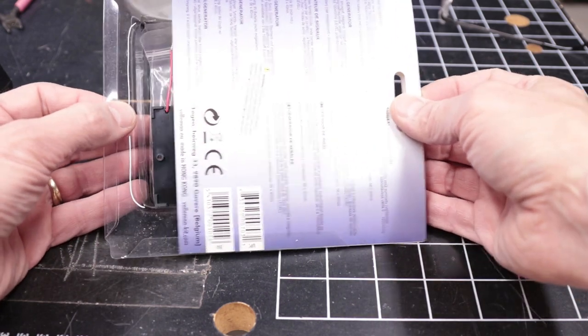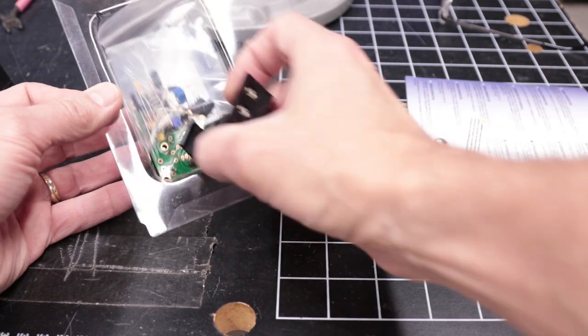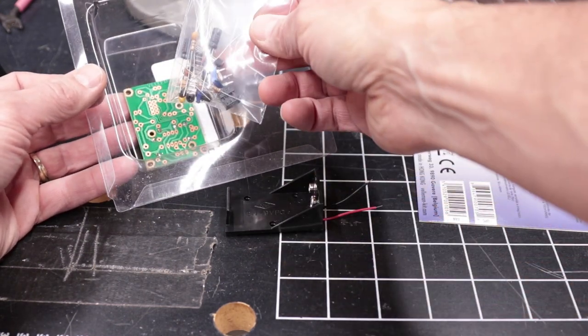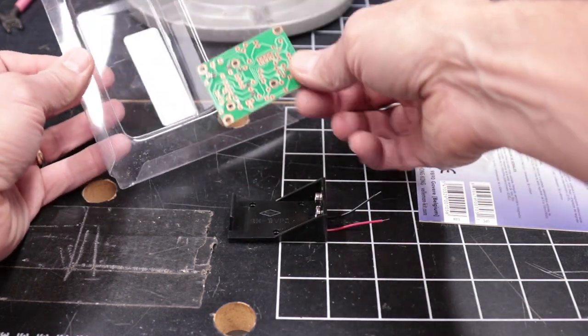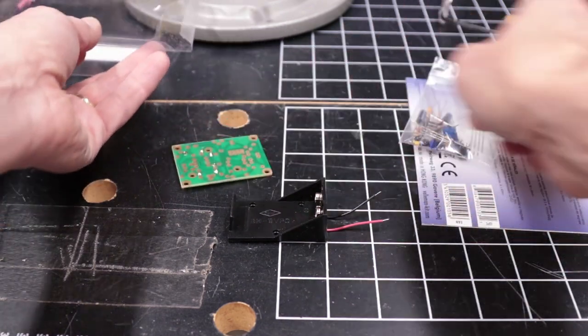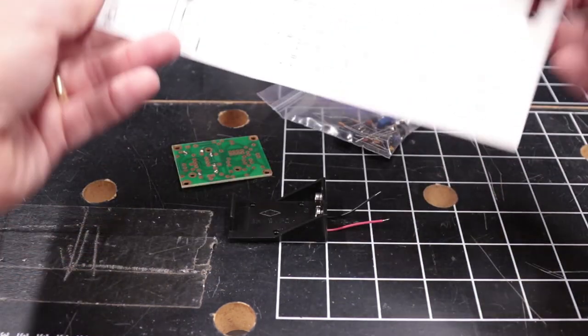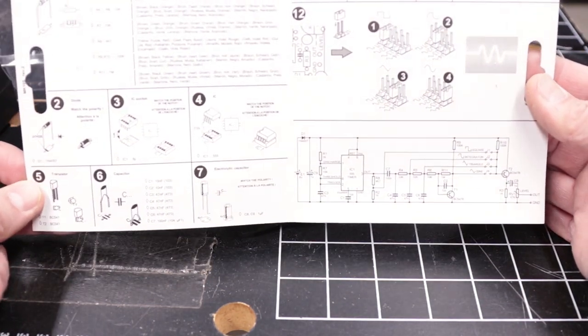Inside this kit, there's the card that holds everything in, a battery holder, a bunch of components in a plastic bag, and a PCB. Inside this card is assembly instructions and a schematic. We'll get to those later.